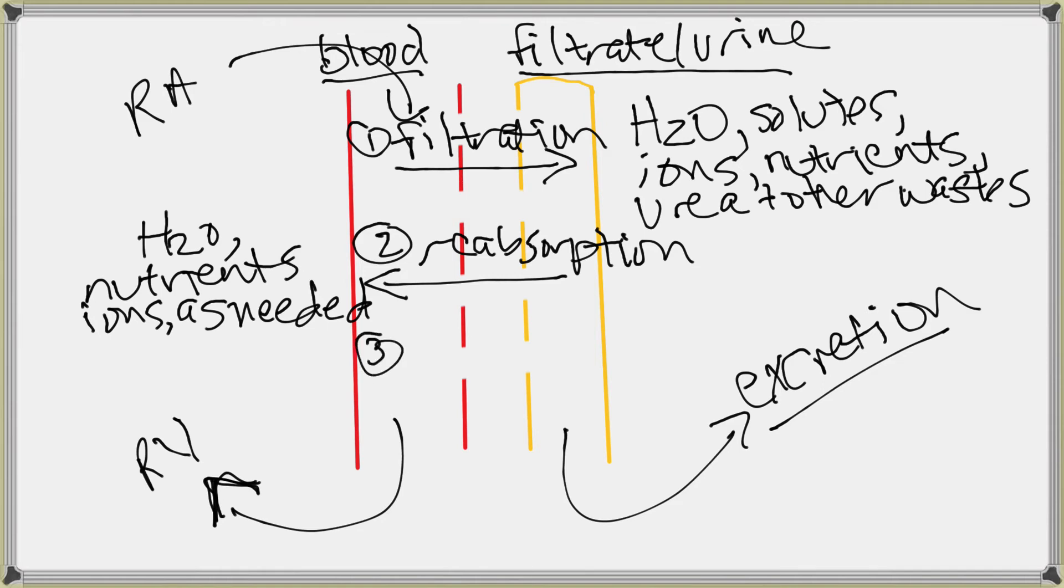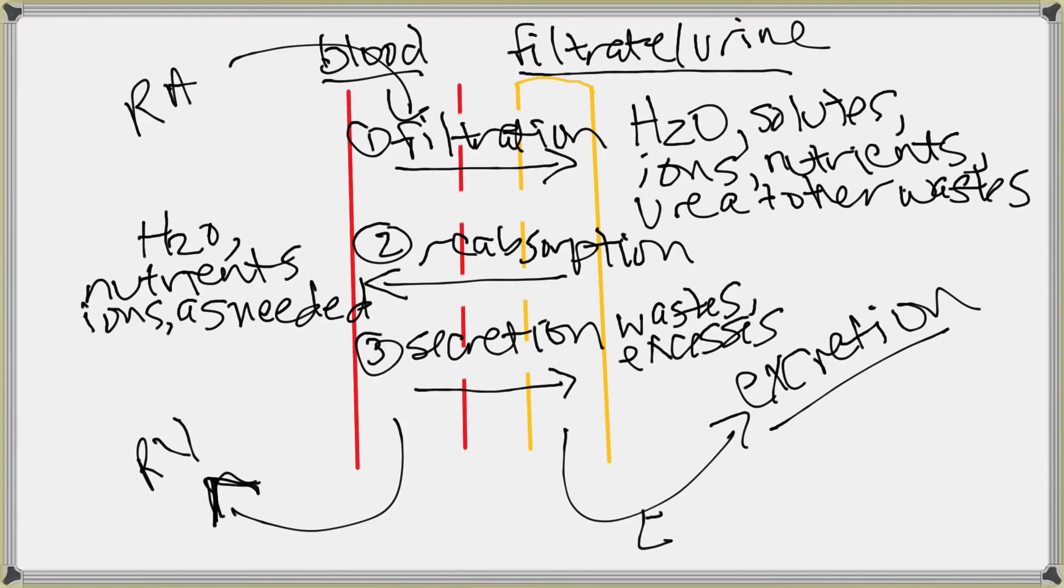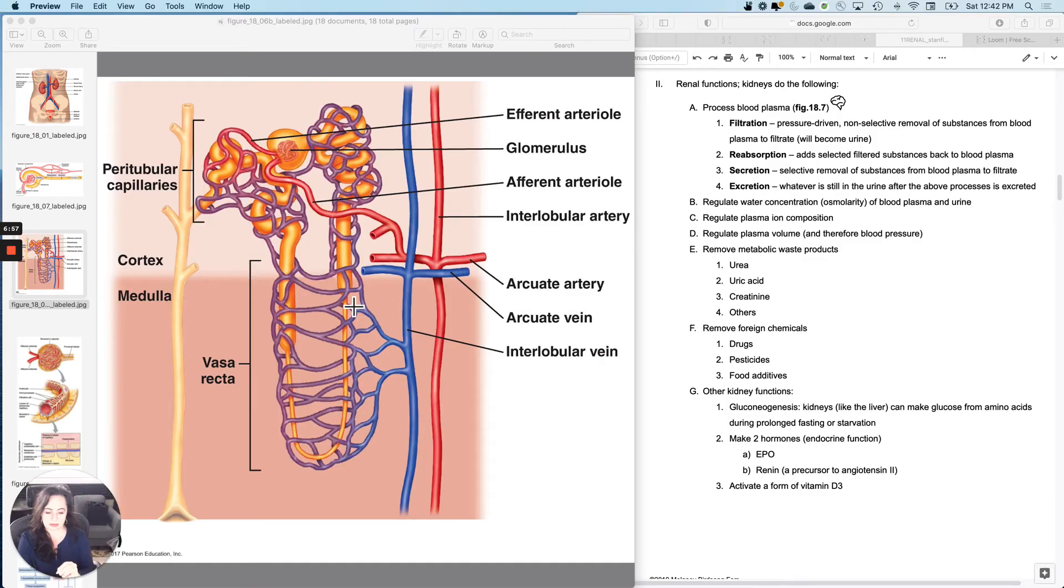And then the third process is secretion and secretion is selective too. Again, using carriers and pumps and things like that to move anything that I didn't catch in the bloodstream, but needed to get rid of. I didn't catch it the first time with filtration because I wasn't really being selective. So primarily what I will move out is wastes and excesses. That's just sort of an introduction to how this works. There are exceptions to each of those things. So whatever ends up leaving is excreted. So it's called excretion. So the equation is excretion equals filtration minus reabsorption plus secretion. That is the equation.